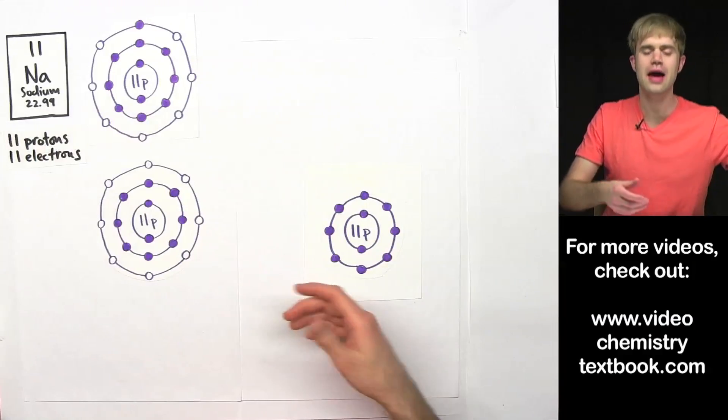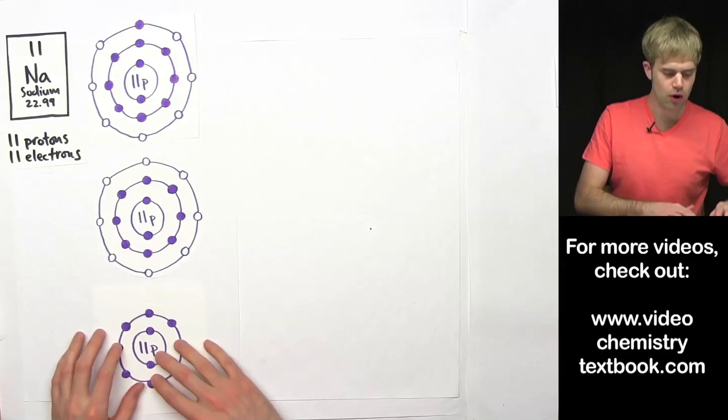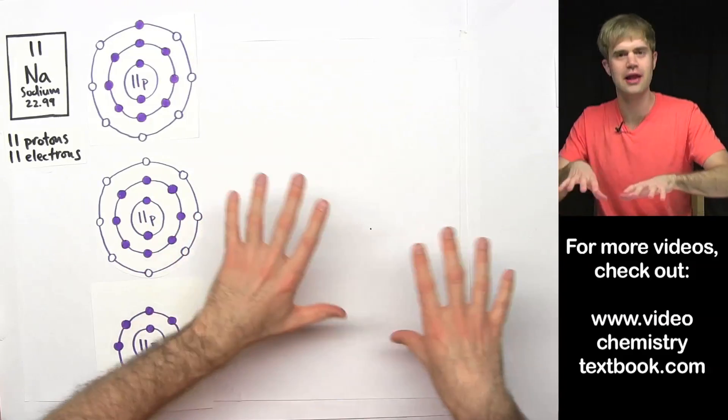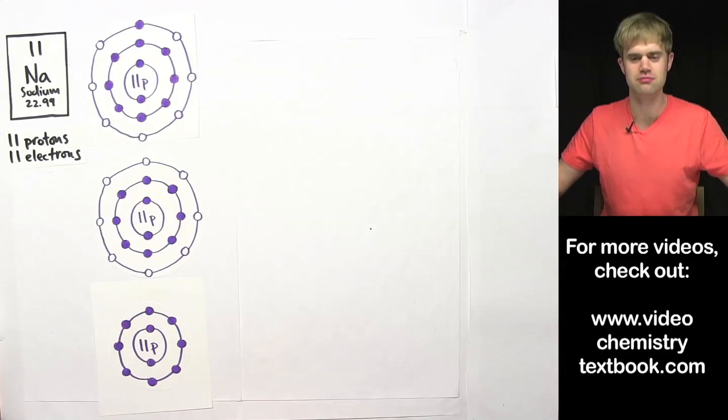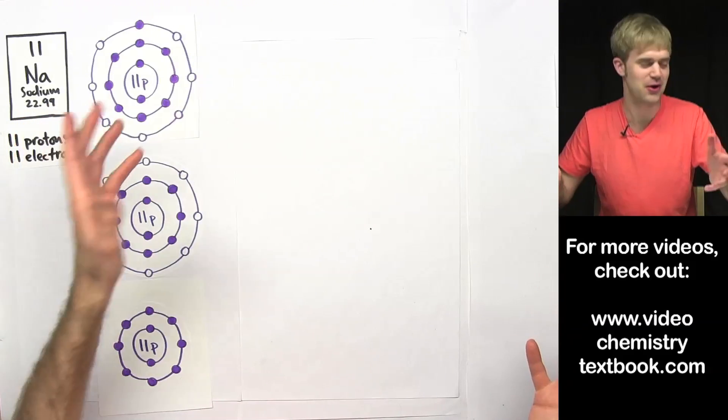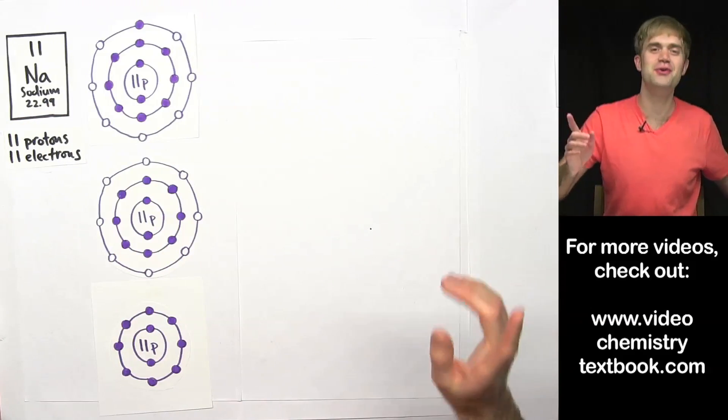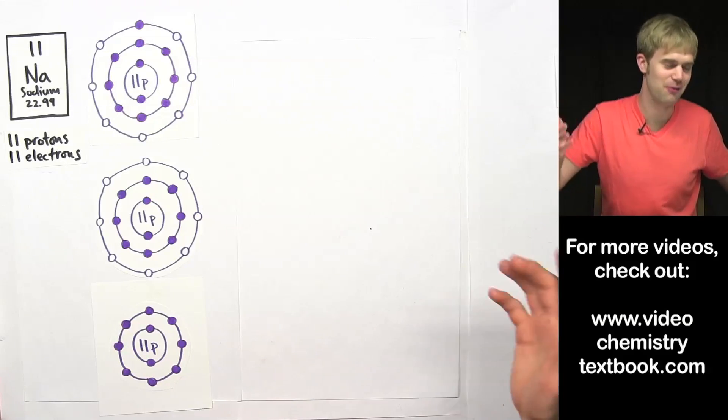an energy level isn't actually a physical thing that you could find in an atom. The energy level is more just there because electrons are in it and when the electrons leave it just doesn't exist anymore. Let me give you an analogy that might help you understand this.